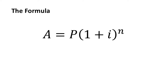Let's look at what each of those components are. A is going to be the total amount that we have at the end of the time period. It's important to be aware that unlike the simple interest formula, it doesn't calculate your interest — it calculates the total amount you have at the end of the period. So that's going to be your principal plus your interest amount.